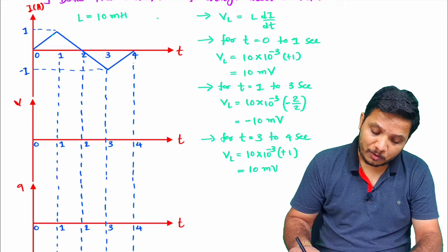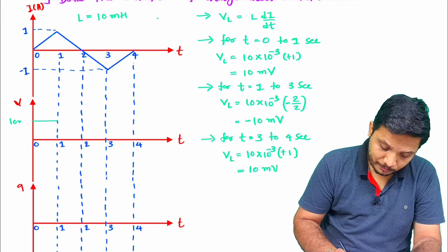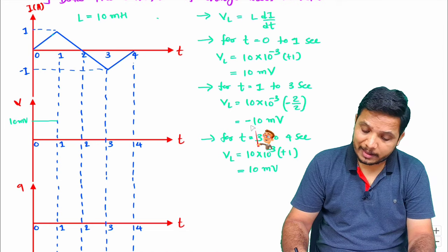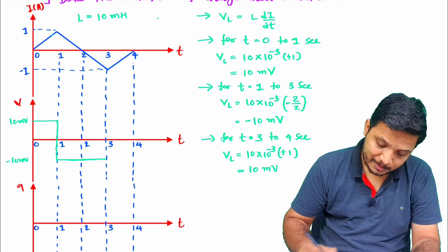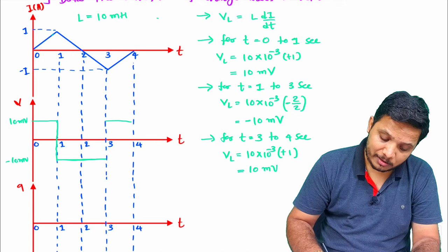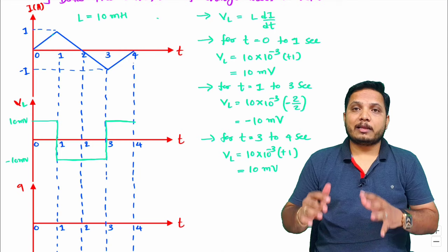Now let us draw the voltage waveform. From 0 to 1 second, voltage is +10 millivolts. From 1 to 3 seconds it is −10 millivolts. During 3 to 4 seconds it is again +10 millivolts. This is how the voltage across the inductance is calculated and plotted as a rectangular waveform.